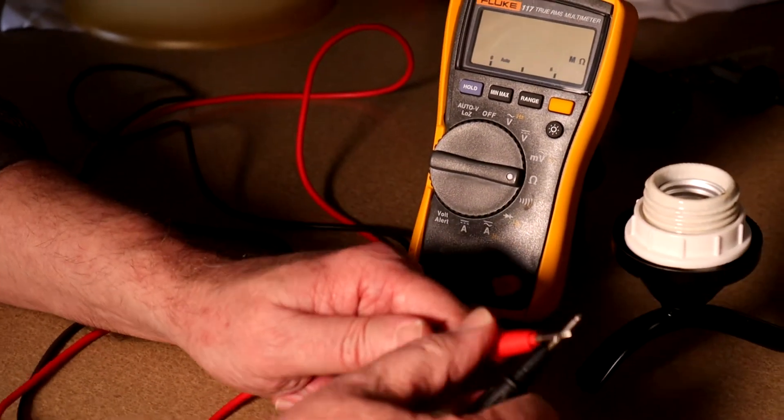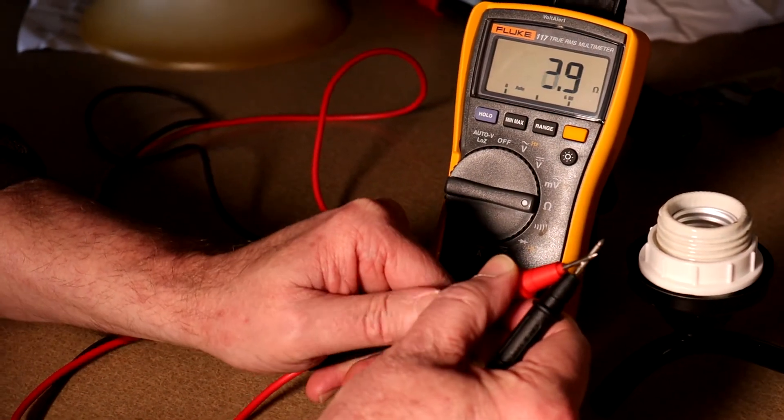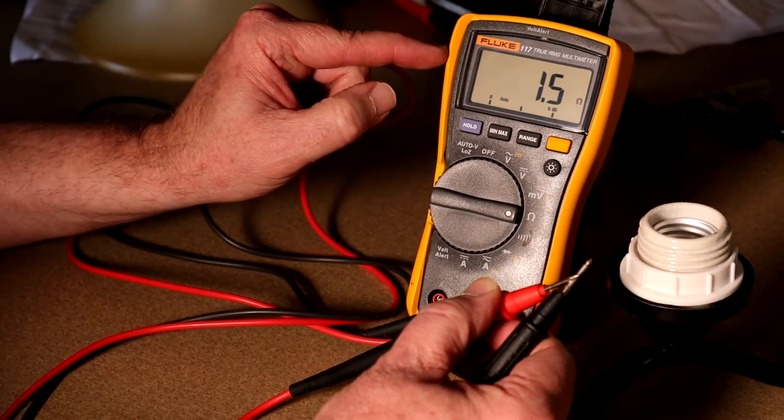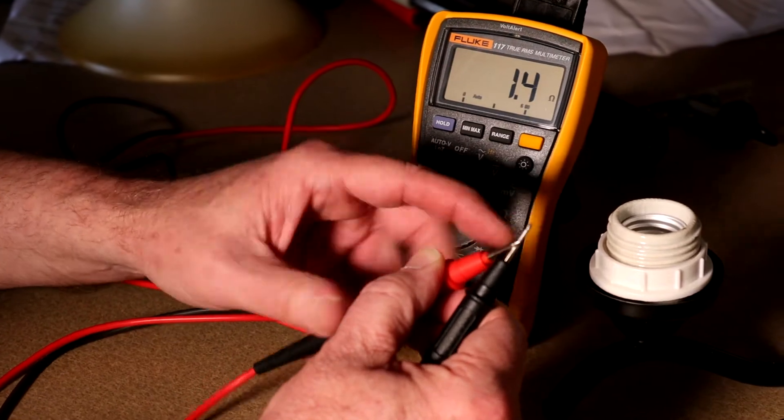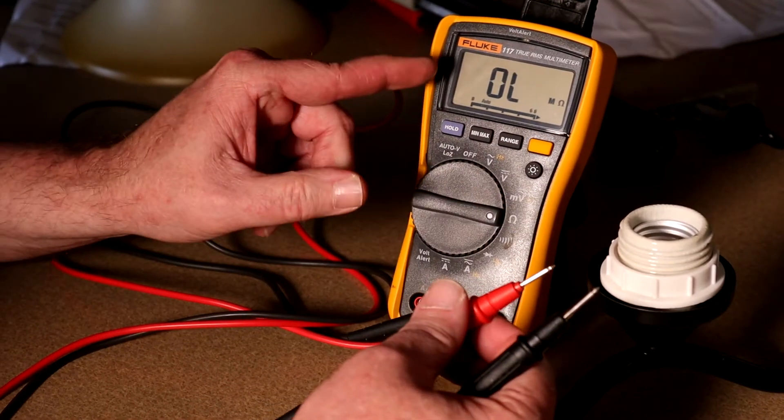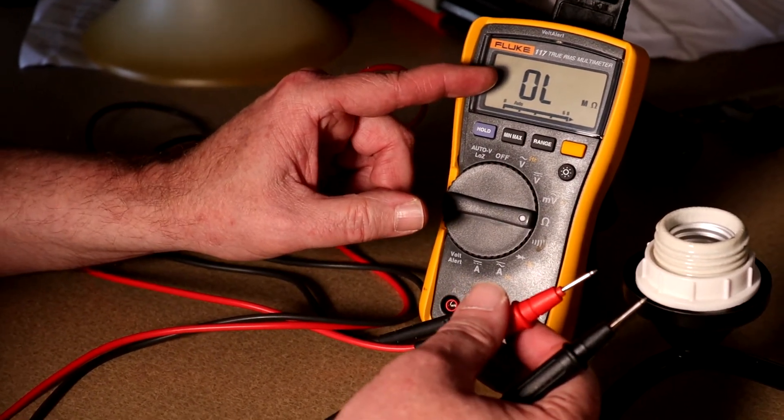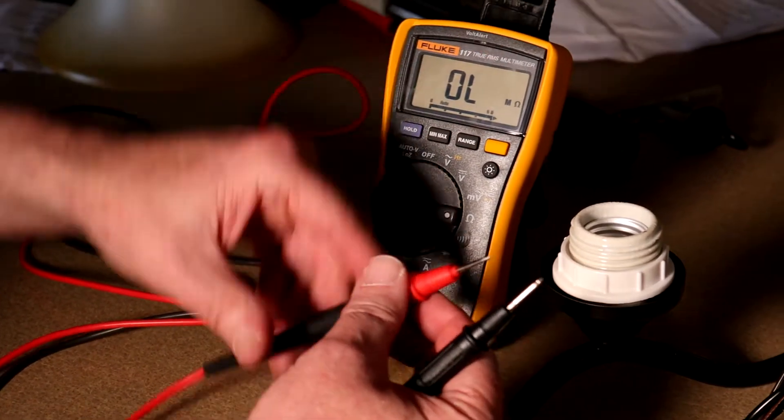If I take these two leads and I put them together like this, you can see this drops to about 1.5 ohms right now. That means there's continuity between these two leads. When I open them, it goes to overload and the whole way up to the mega ohm scale. You can see over here on this side.